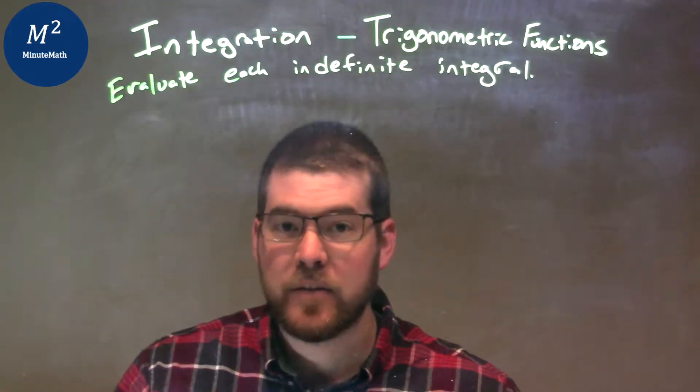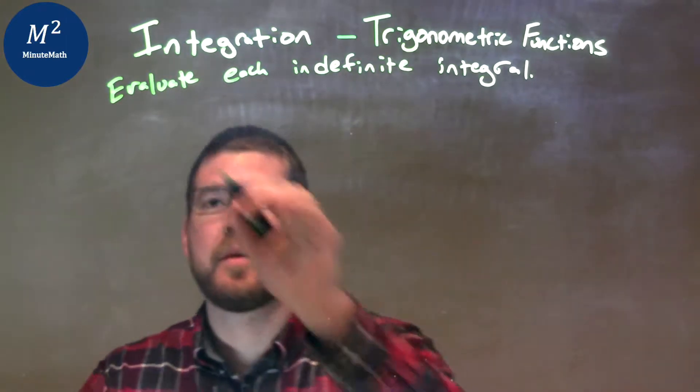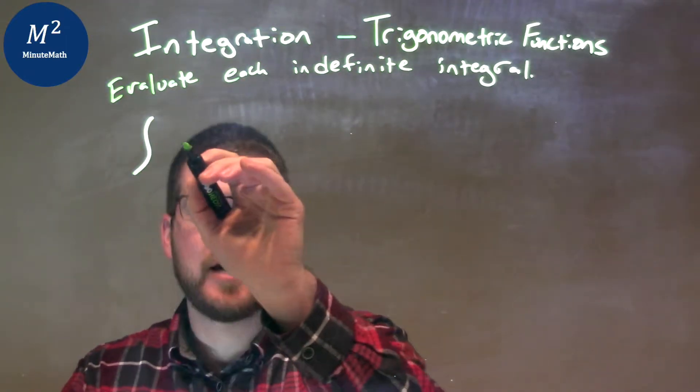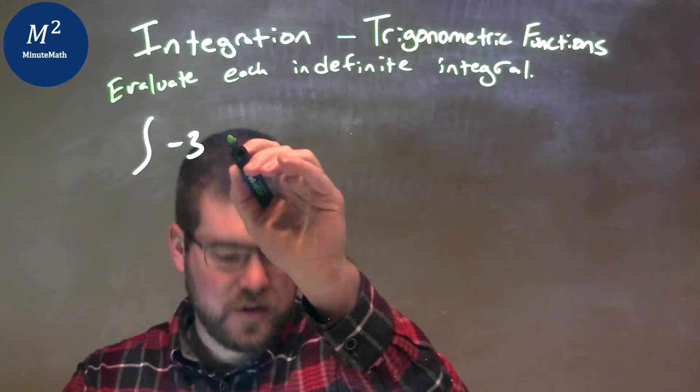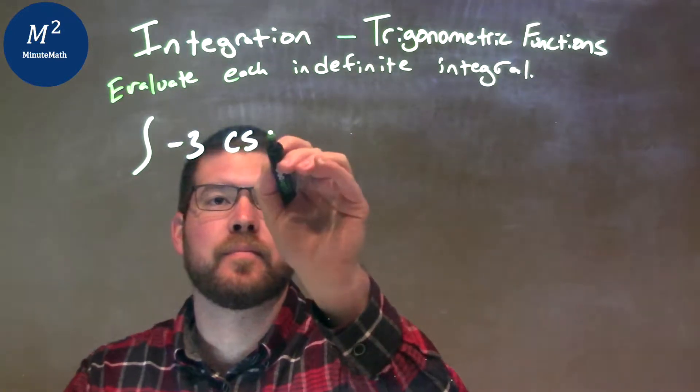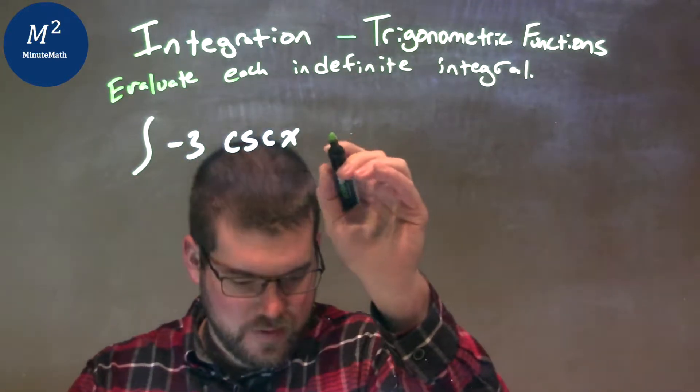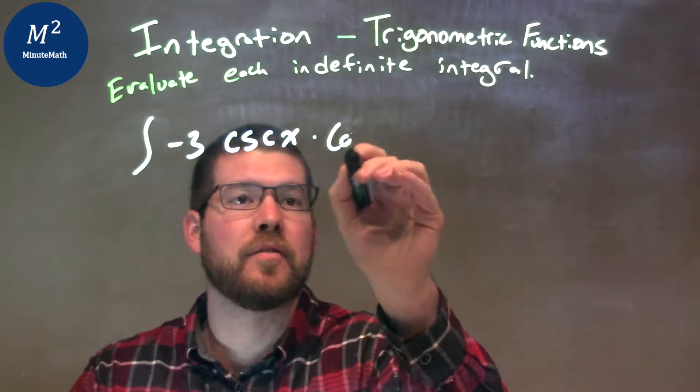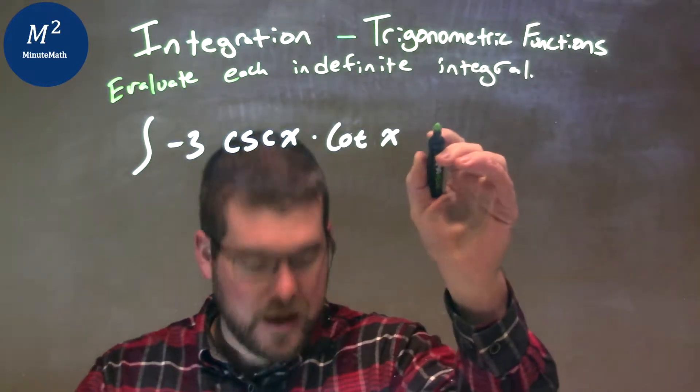So I was given this integral here: the integral of negative 3 cosecant x times cotangent of x dx.